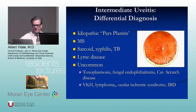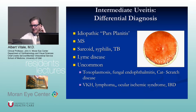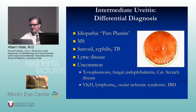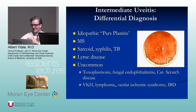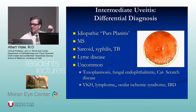Intermediate uveitis can be associated with systemic conditions such as multiple sclerosis, sarcoidosis, and syphilis. Lyme disease — its most frequent ocular presentation is intermediate uveitis in patients from endemic areas. Uncommon mimics include fungal endophthalmitis, cat scratch disease, and toxoplasmosis with a very peripheral lesion. Non-inflammatory conditions such as Susac's ischemic syndrome with unilateral peripheral vasculitis can also mimic it.